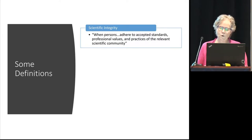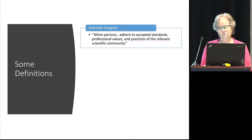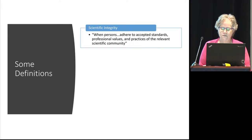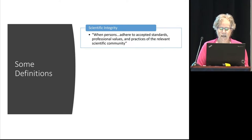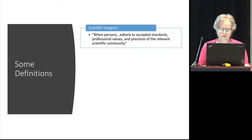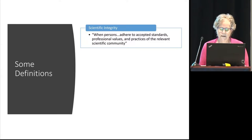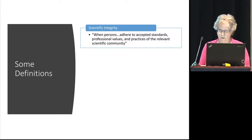Detrimental or questionable research practices are when researchers commit research misconduct that damages research and strays from the norms of appropriate practices of science. In our document, we use the term 'detrimental or questionable research practices,' while in Canada and abroad they use 'questionable research practices.'